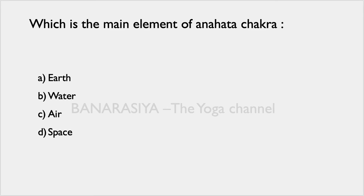The next question: which is the main element of Anahata Chakra? Options are Earth, Water, Air, or Space. The chakras are linked to the Panch Tatvas — the five elements of our body and the Earth. The Anahata Chakra is associated with the Air element — Vayu Devata — because this chakra is the seat of infinite feeling and activates the feeling of the infinite.